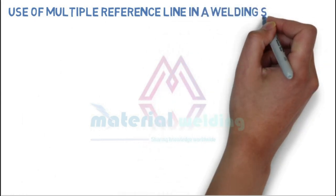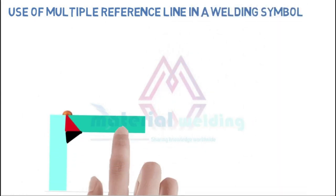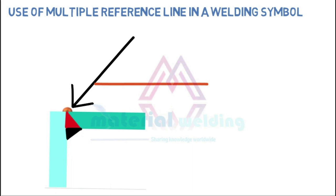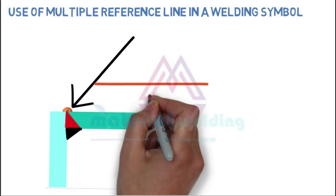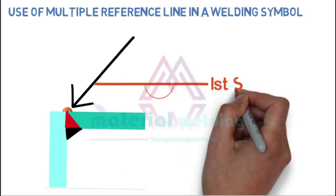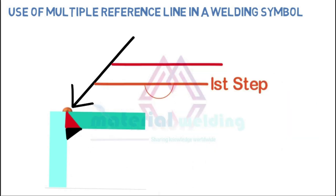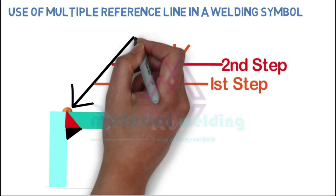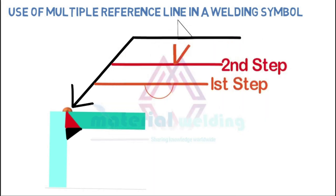Let us learn the use of multiple reference lines in a welding symbol. More than one reference line shows the sequence of welding operations for a welding joint. The first operation is given on the reference line nearest to the arrow, and subsequent operations are specified sequentially on additional reference lines. Here, a sequence of three operations is shown: the first calls for a backing weld on the arrow side; the second specifies a corner single bevel weld on the other side of the arrow; and the third adds a fillet weld on the other side, required to be flat as shown using a contour or finishing symbol.